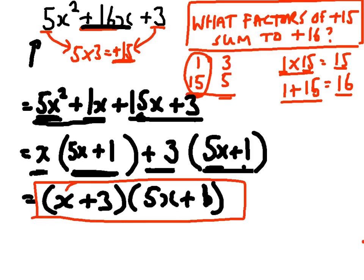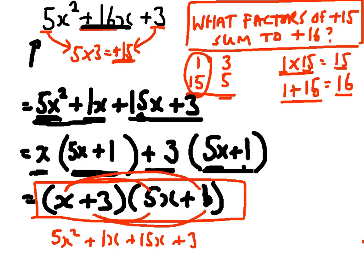I can just check that. So x times 5x is 5x squared, x times 1 is plus 1x, 3 lots of 5x is plus 15x, and 3 lots of 1 are plus 3.